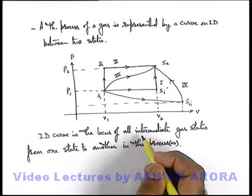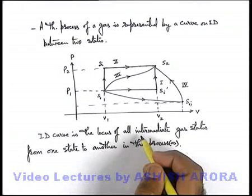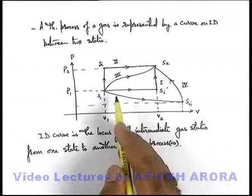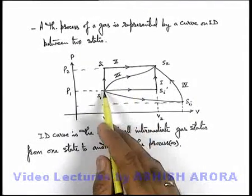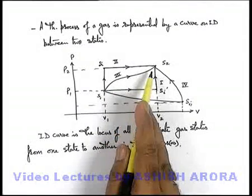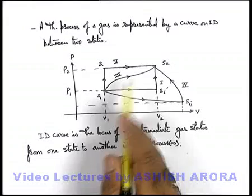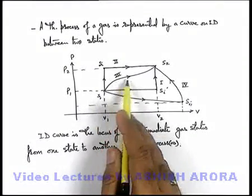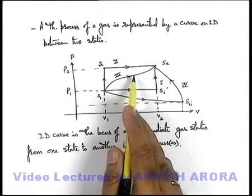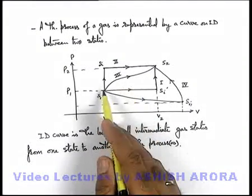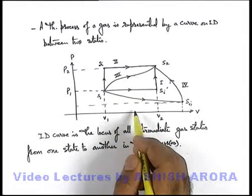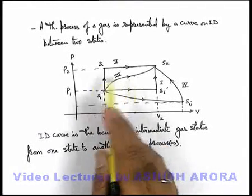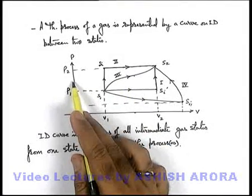Always remember: in a thermodynamic process, when plotting an indicator diagram curve for a gas from S1 to S2, we use the locus of all intermediate states. This curve also tells us that at any point between S1 and S2, if we use a given volume, the curve will give us the corresponding pressure.